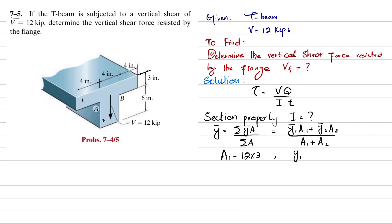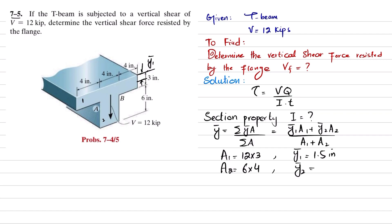Y1-bar is the distance from the upper reference line to the mid of the first section, which equals 3 divided by 2, equal to 1.5 inches. Area A2 is 6 multiplied by 4 for the web section. Y2-bar is the distance from the reference surface to the mid of the second section: 3 plus 3 equals 6 inches. So Y2-bar equals 6 inches and Y1-bar equals 1.5 inches.